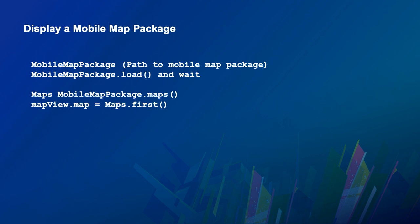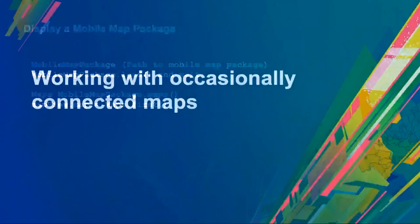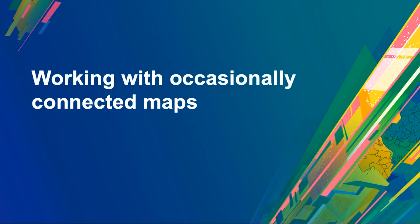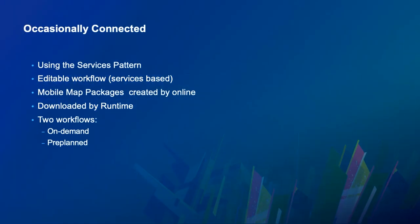The code Nick showed: give the mobile map package its path on the device, tell it to load, then get access to the array of maps contained inside. Ask for the first one if that's all you need. That's the desktop-to-device workflow. Now let's look at the two more flexible workflows for the occasionally connected scenario, where your data is backed by services — on-demand and pre-planned — which you can use for read-only or editing work.